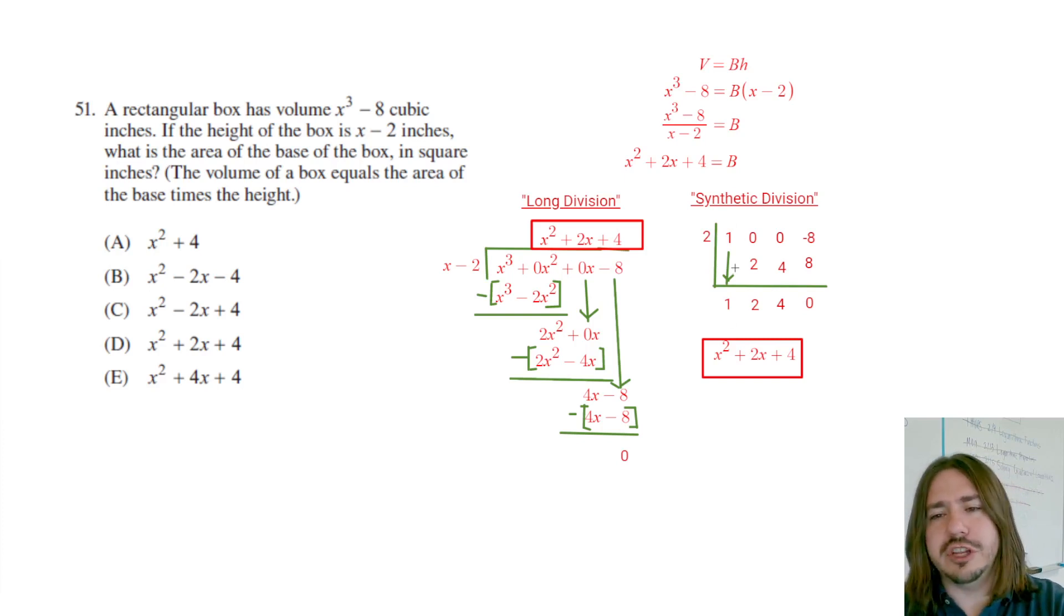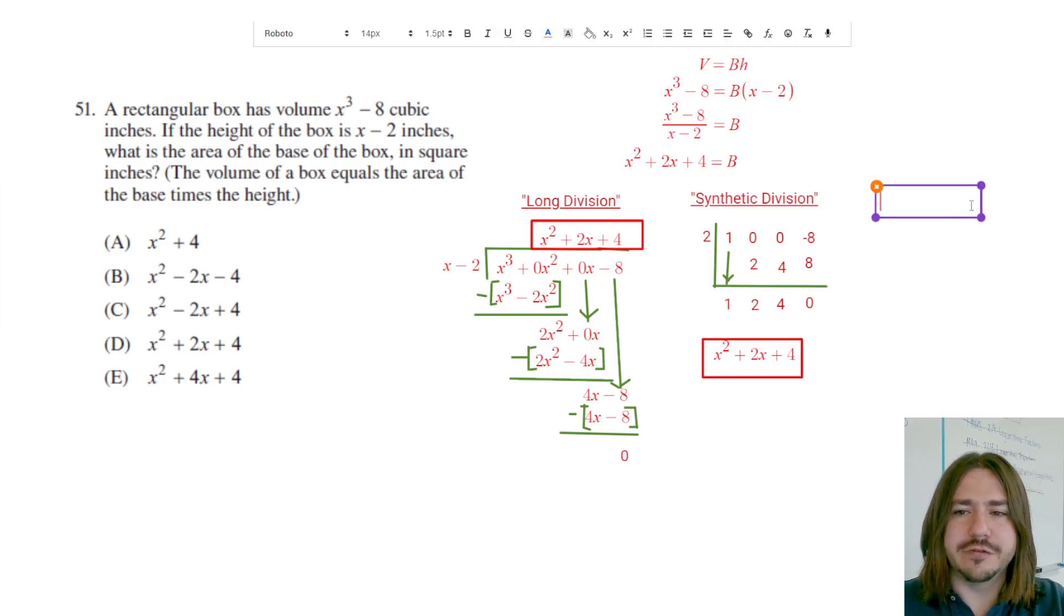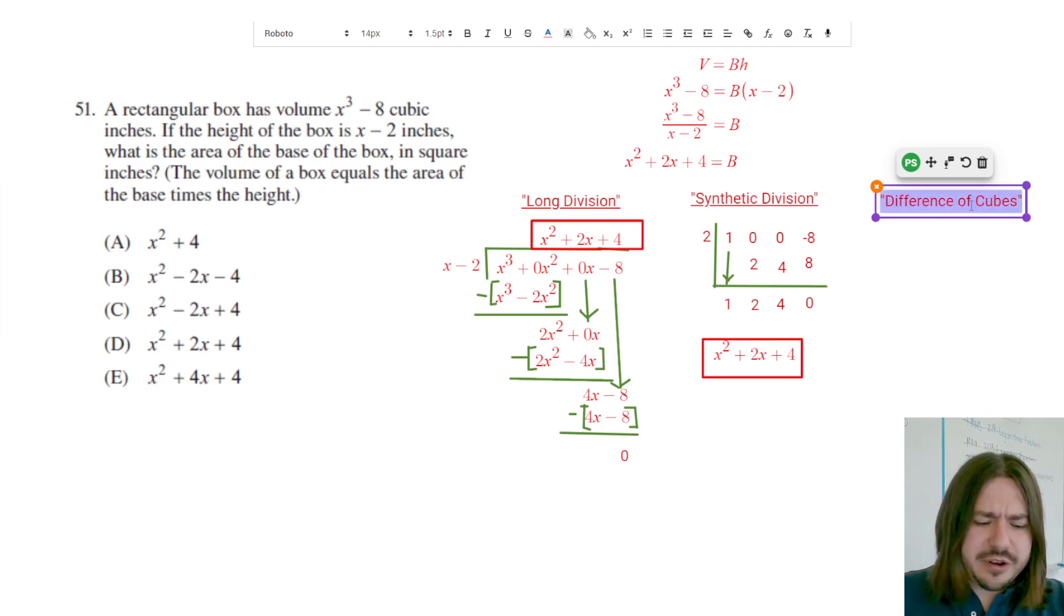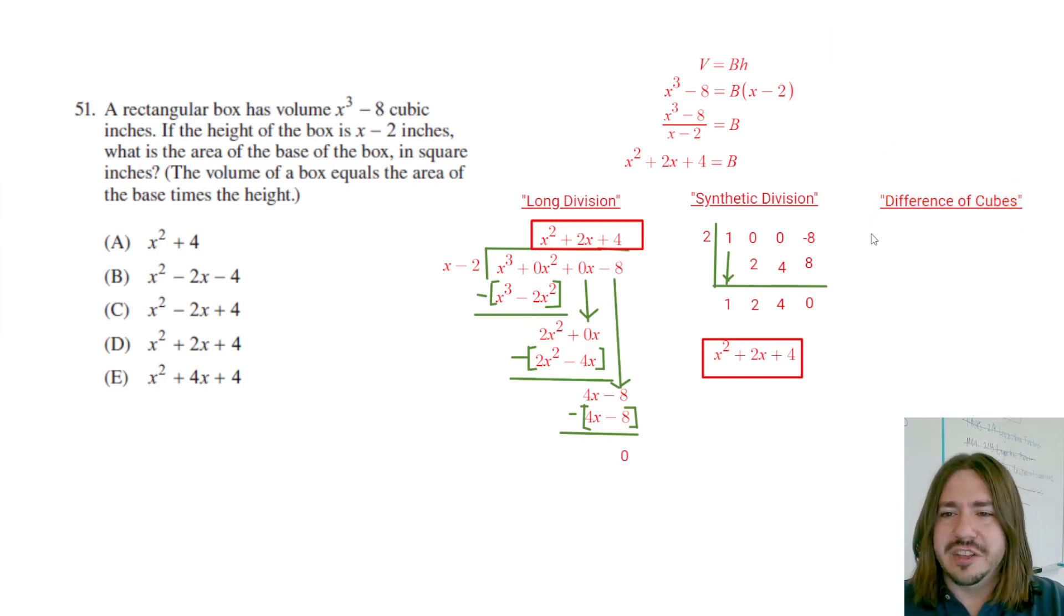There's one other sort of cheap way of getting here. If you happen to know how to factor a difference of cubes and you recognize this as a difference of cubes, you can kind of bypass the division altogether. So it's kind of like factoring out a difference of squares, except it's the rule for factoring difference of cubes.